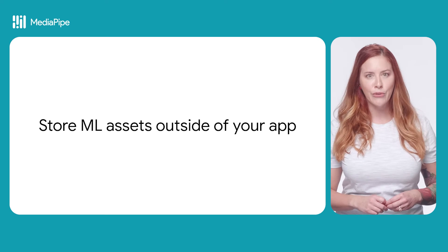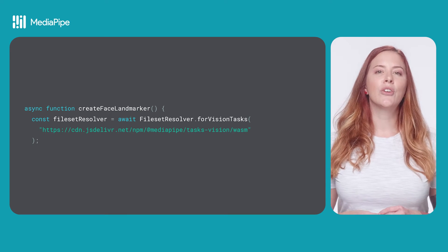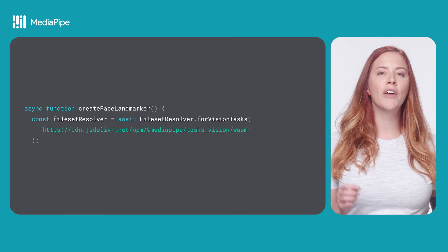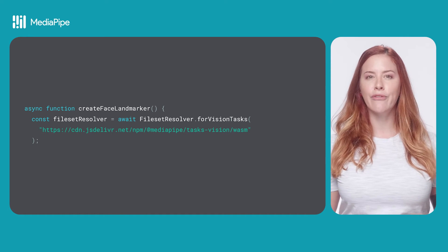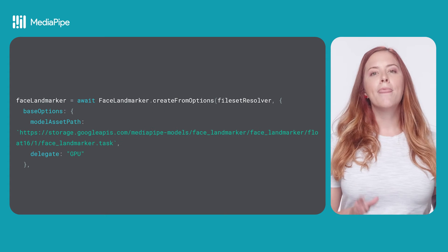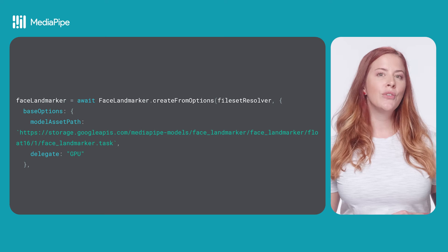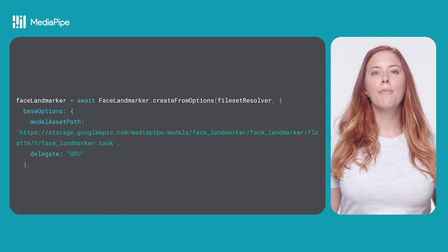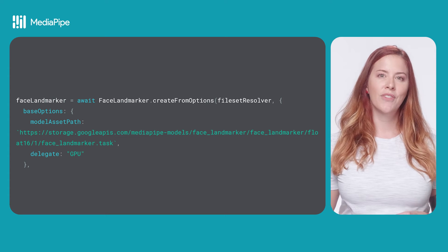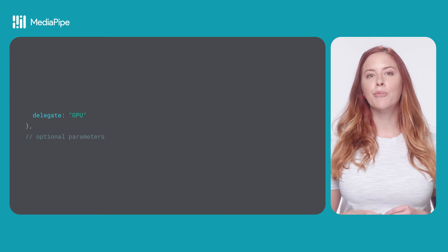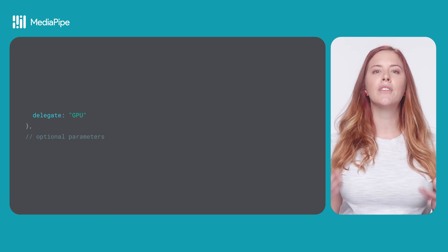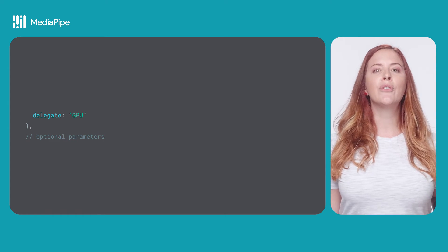Let's explore the code for this. Here we have a function, createFaceLandmarker. First, we configure our WASM binary loading using the FileSetResolver for vision tasks method. Then we create the face landmarker using the FaceLandmarker.createFromOptions method, passing the file set resolver you just created and the model. You can also provide optional parameters — I show them all here in this example, even though they're mostly the default values, just to give you an idea of how they look.